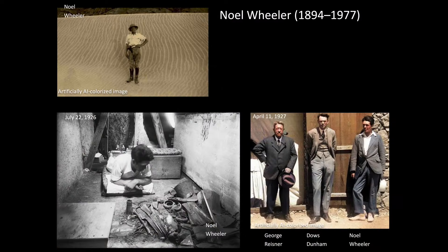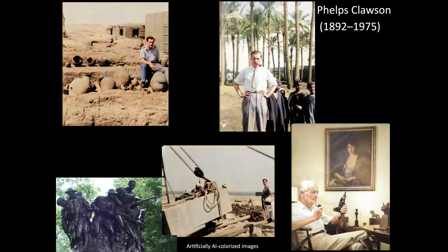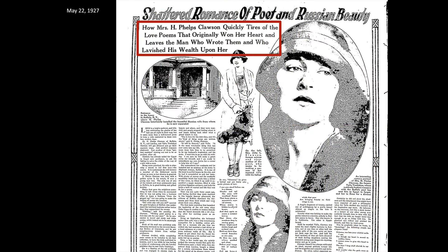We also have British archaeologist Lieutenant Commander Noel Wheeler, who worked for Reisner from the mid-1920s until the early 1930s and was integral in this season. And then a young archaeologist from a well-to-do Buffalo family named Phelps Klassen, who was so handsome he modeled for the 107th Infantry Memorial statue in New York at East 57th and 5th. He had a lot on his mind, including recovering from a failed marriage to a Russian actress that hit all the gossip papers in Buffalo.